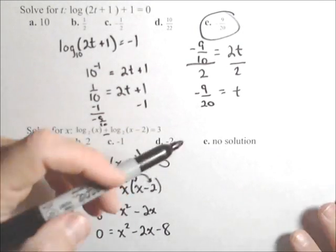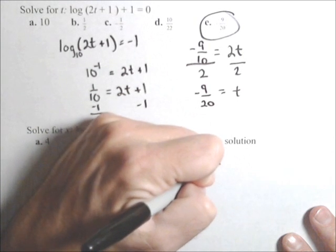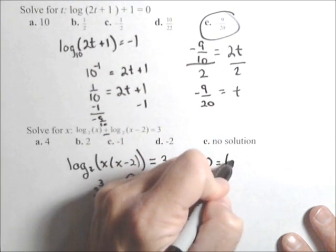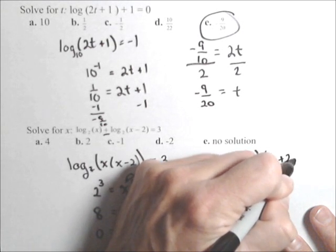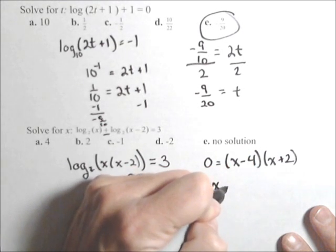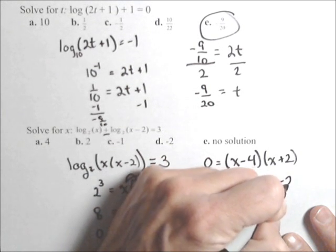Now we can look to see if it'll factor or check our graphing calculator. This one will factor. It factors into x minus four times x plus two, which gives us two solutions: x equals four and x equals negative two.